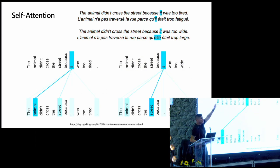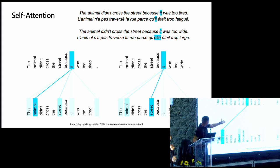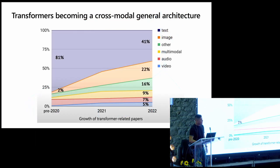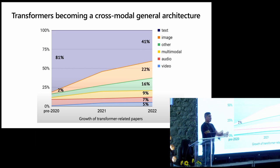For example, when you translate English to French, in two English sentences the word 'it' in the first refers to the animal, and in the second refers to the street. This model allows us to understand the relationship with other words without the one-by-one processing and large memory requirements. Transformers are now becoming a thing not just for text — built originally for translation, but the architecture is being used across more than just text, becoming a cross-modal general architecture.